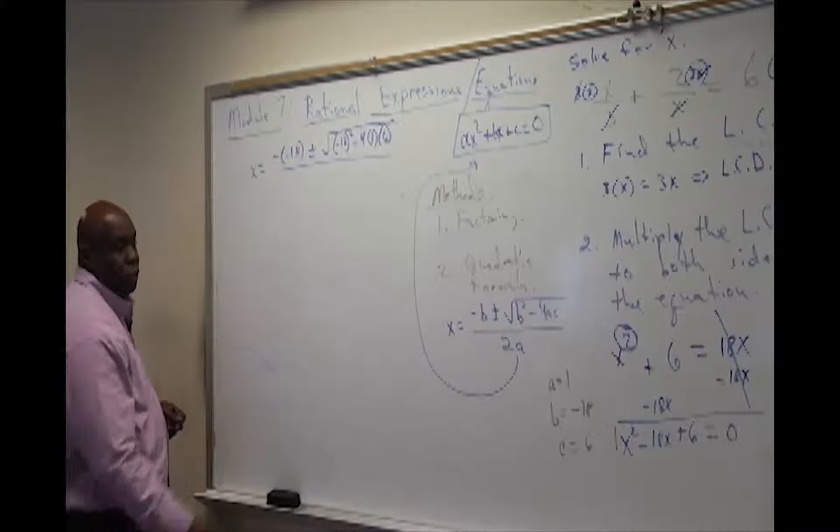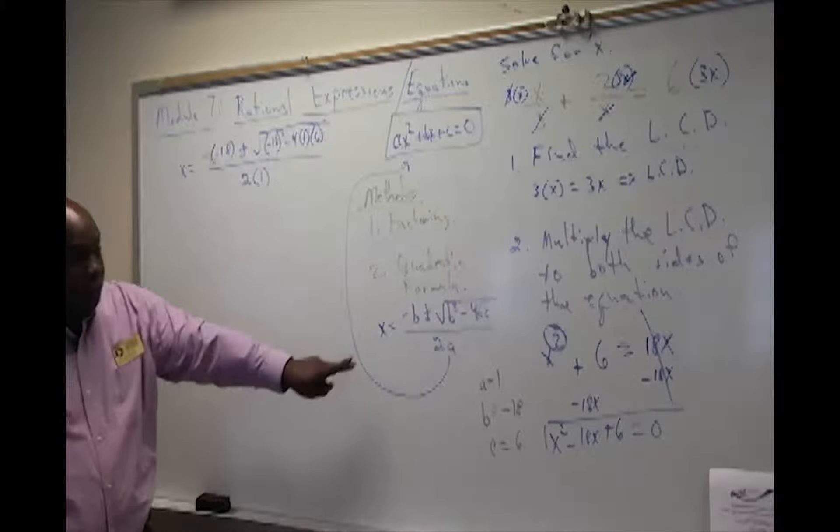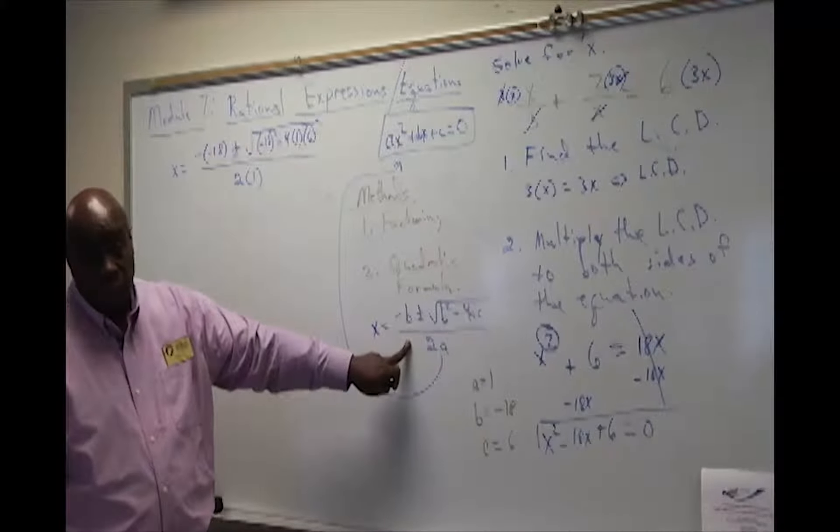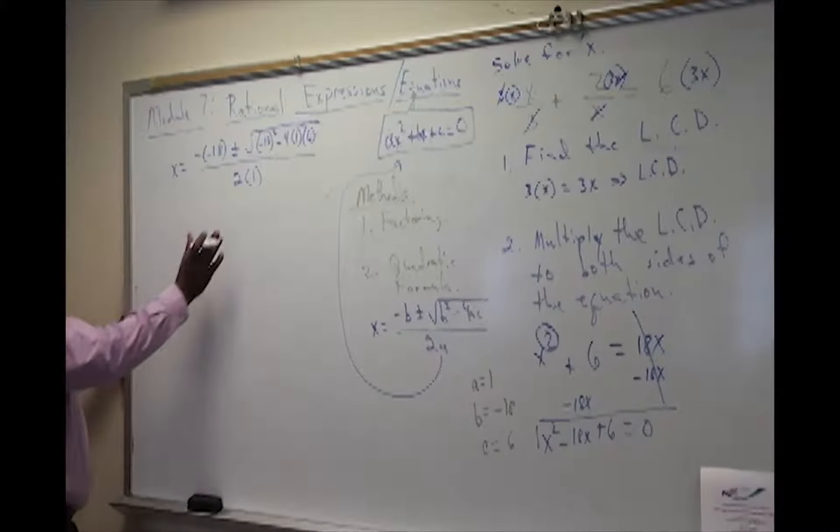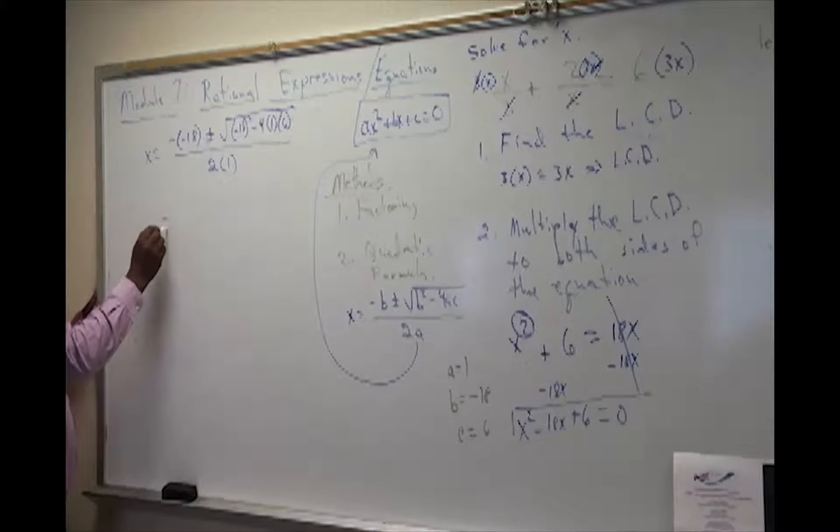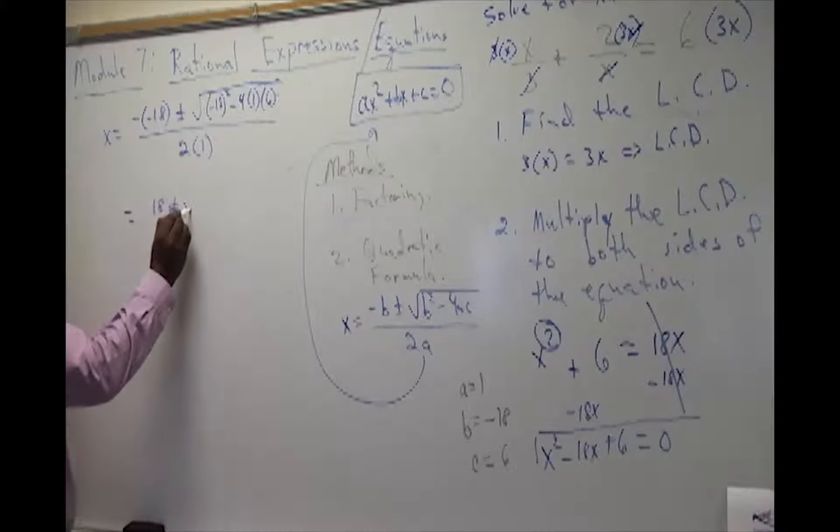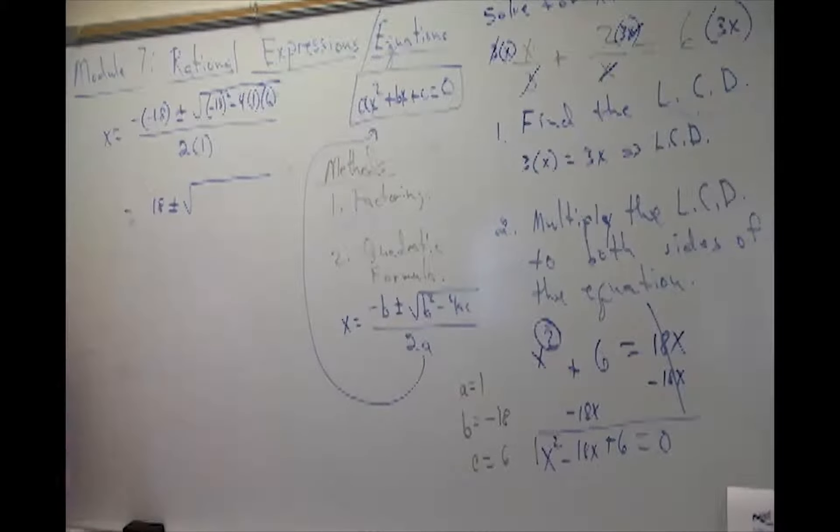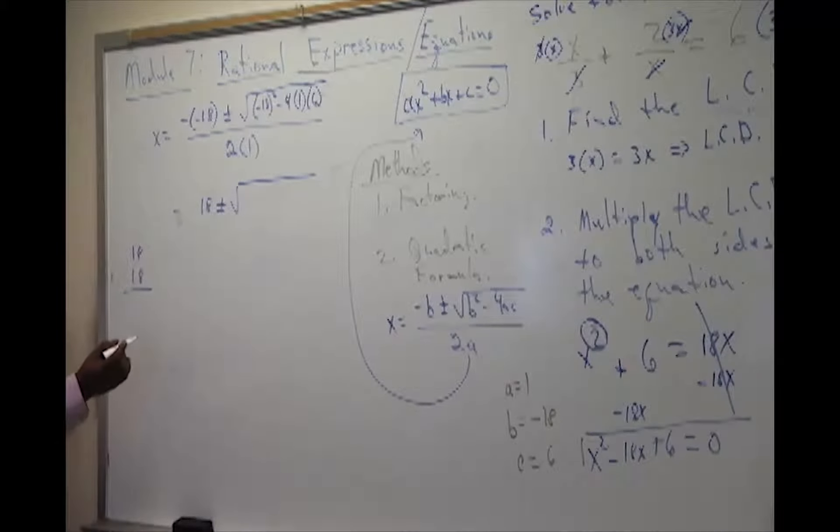The whole expression is divided by 2 times a, as you see, and a again is equal to 1. So basically what we're doing is following this formula. Plug it in as we did earlier, or we substitute it, and this is what you have before you. Now let's simplify. A negative of a negative, which means the opposite of a negative is 18, plus or minus. We have this radical, which is the square root, and we need to simplify it within. So negative 18, that's meaning that 18 times 18, we need to multiply.